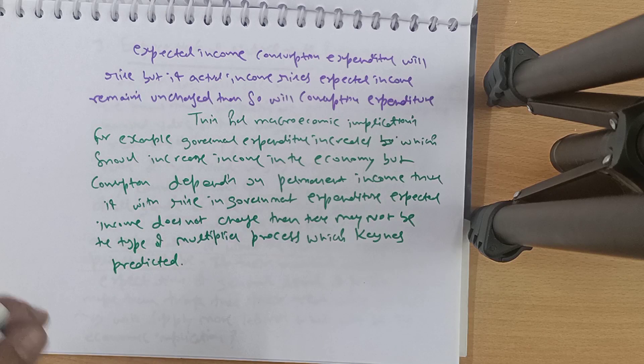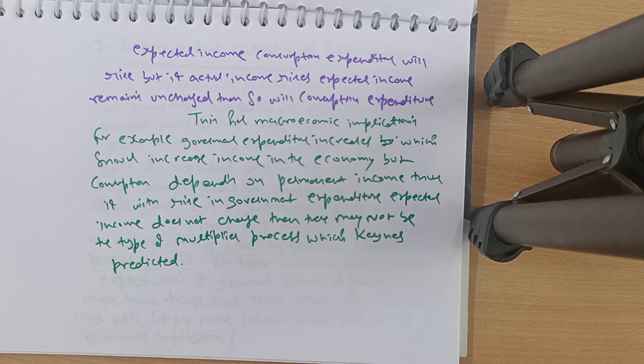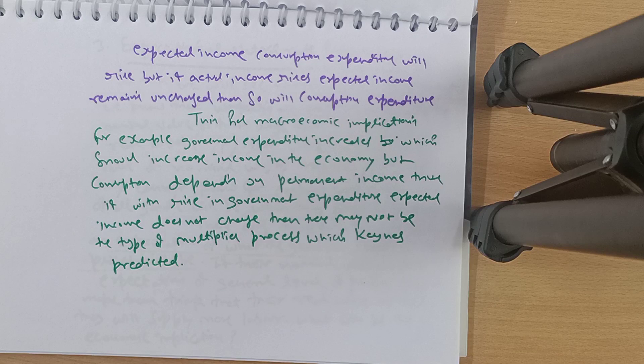This has macroeconomic implications. If government expenditure increases and raises income, but that income rise is not seen as a permanent increase, consumption may not respond. The traditional multiplier process assumes government spending raises autonomous spending, which raises income. But we must now add: whether people expect their permanent income has risen. If they see it as temporary, the multiplier process will not be as effective.